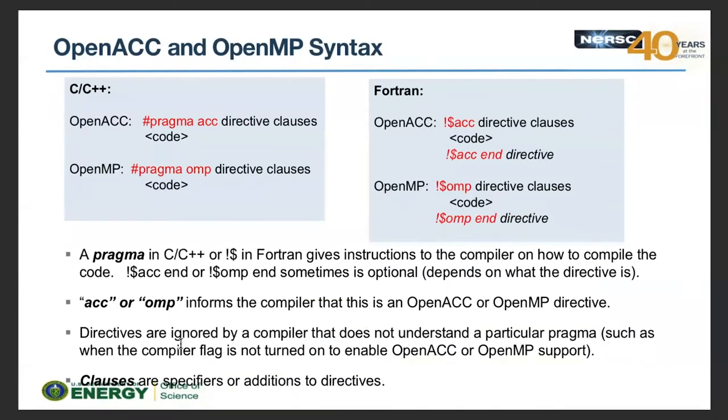Now let's talk about syntax. For OpenACC you use '#pragma acc', and for Fortran you use '!$acc'. Not every 'end' clause is required — some are optional. For C there's no end clause; it's delimited by curly braces. For OpenMP it's '#pragma omp'. This informs the compiler it's a directive for OpenACC or OpenMP. Without enabling flags, like '-fopenmp' for GCC, the compiler treats the directive as a comment — that's how you maintain sequential and parallel code in one file.